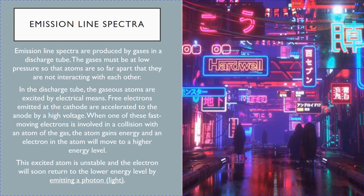So firstly, the gas in the discharge tube must be excited, and this is done using electricity. What this means is that there will be free electrons emitted at the cathode. And using a high voltage, these electrons are accelerated so that they can collide with the atoms of the gas.